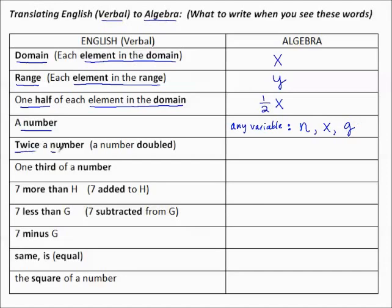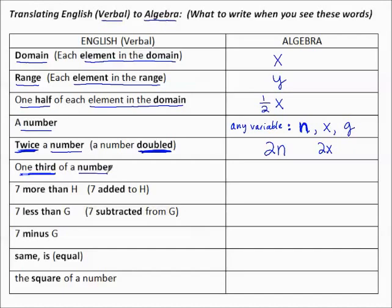Twice a number, or a number doubled — twice or doubled means two times that number. So if I'm going to use N for number, then I write twice that number as 2N. If I used X, I would write 2X. If I used G, I would write 2G, and so on. One third of a number: if I'm calling the number N, one third of N looks like that.